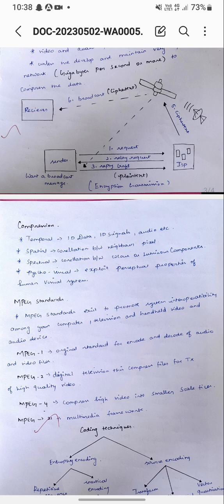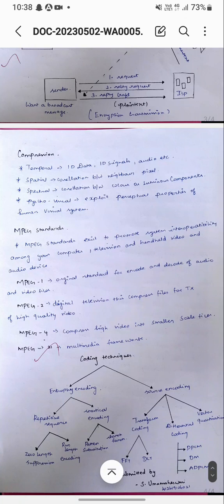MPEG stands for video compression standard of sequential pictures. MPEG standards exist to promote interoperability among computers, televisions, and handheld video and audio devices. MPEG has standards: MPEG-1, MPEG-2, MPEG-4, and MPEG-21.